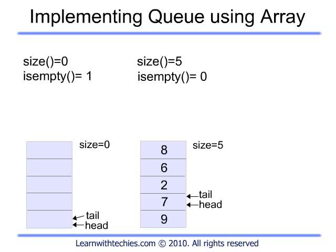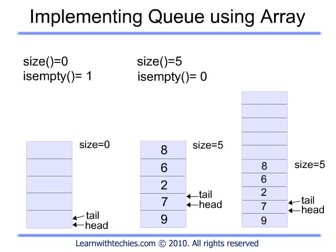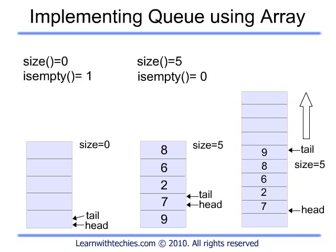Wrapping around the queue may seem beneficial when considering space, but it adds more complexity to the program and makes it more time consuming in the worst case. For example, if we want to add more elements, we need to do an ArrayAlloc operation to increase the space of the array, copy all the wrapped-around elements to the top, and then modify the tail pointer. Subsequent NQs will then start from the new tail pointer.